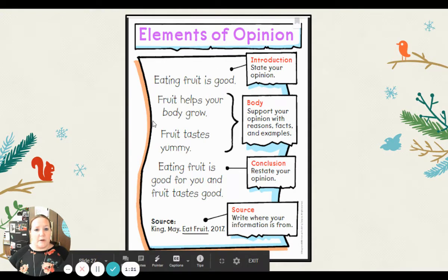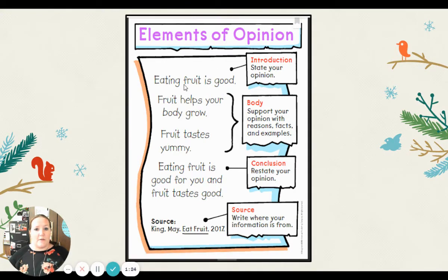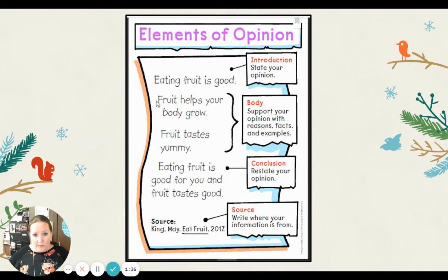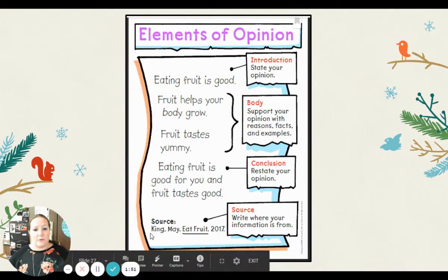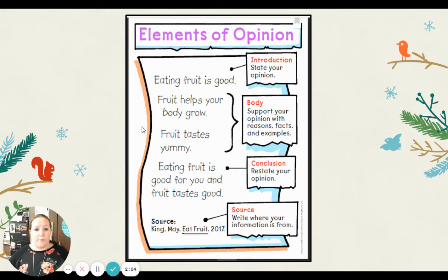Here's an example. This friend has written their opinion: 'Eating fruit is good.' Remember, that's an opinion — some people might not like fruit. Here's the body where they give their reasons: 'Fruit helps your body grow. Fruit tastes yummy.' The conclusion wraps it up by restating the opinion: 'Eating fruit is good for you, and fruit tastes good.' And then they gave the source — a book called 'Eat Fruit' written by May King.